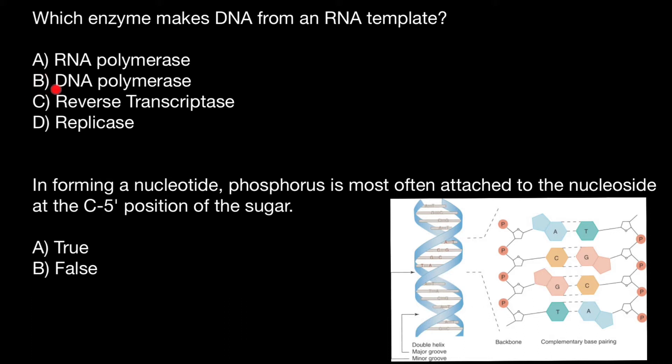And variant B, DNA polymerase is going to use DNA template strand in order to make another strand, a complementary strand of the DNA. I will skip answer C for now.